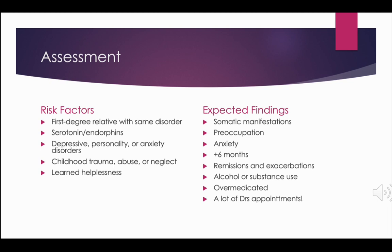CT scans, MRIs, and other lab tests can be performed to rule out any underlying pathology. The PHQ-15 can be used to identify the presence of the 15 most commonly reported somatic manifestations, including abdominal pain, back pain, pain in the extremities and joints, menstrual problems or cramps, headaches, chest pain, dizziness, fainting, heart pounding or racing, shortness of breath, pain with sexual intercourse, bowel elimination problems, nausea and indigestion, gas, and lethargy or sleep issues.